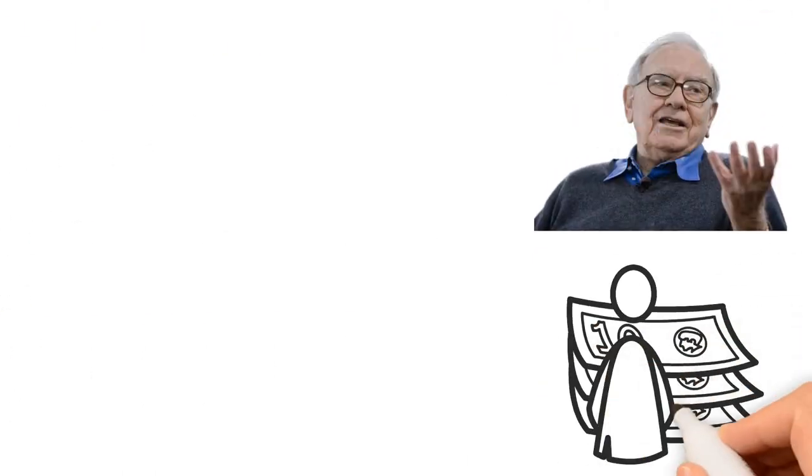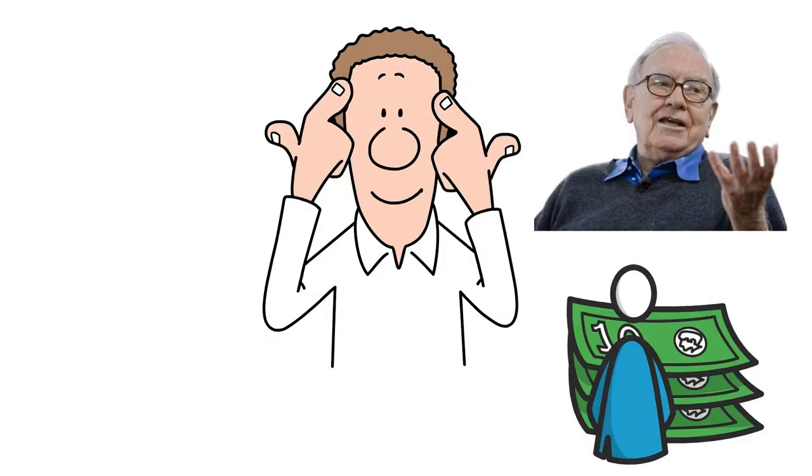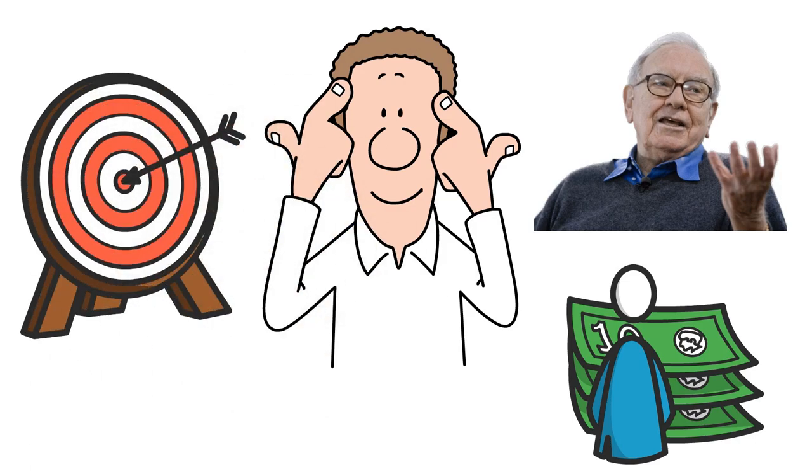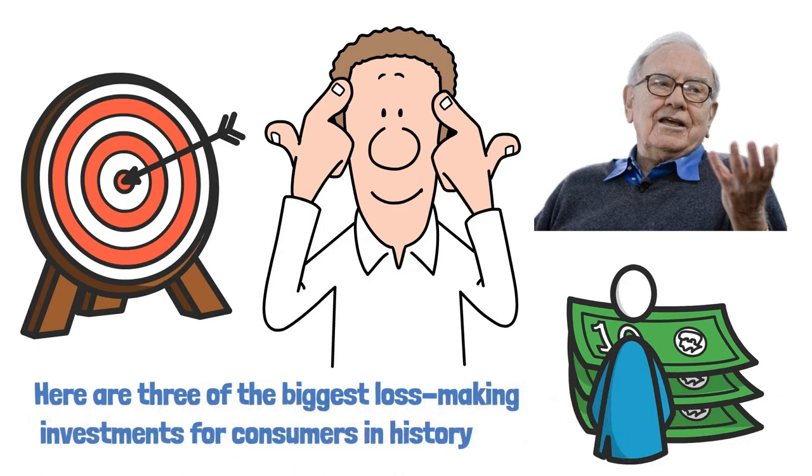You see, Buffett didn't build his empire by chasing after quick cash. He did it by making smart, well-thought-out investments and that's exactly what you should aim for. Now, as I promised, here are three of the biggest loss-making investments for consumers in history. First up, we've got the infamous tale of the pet rock craze.